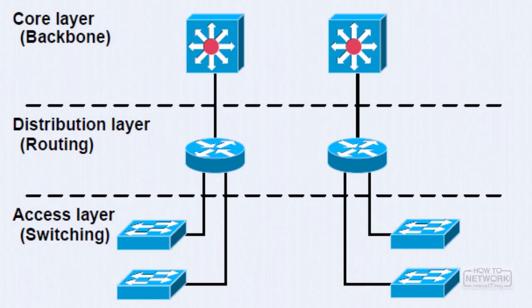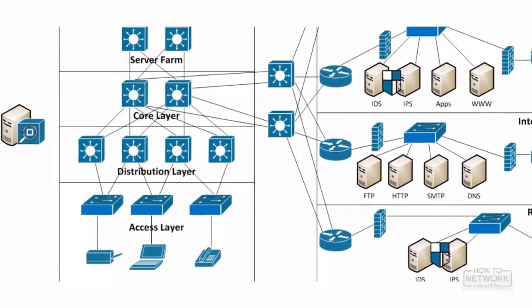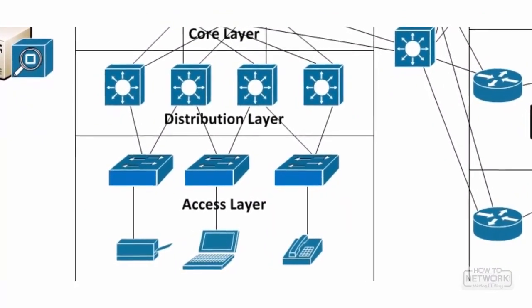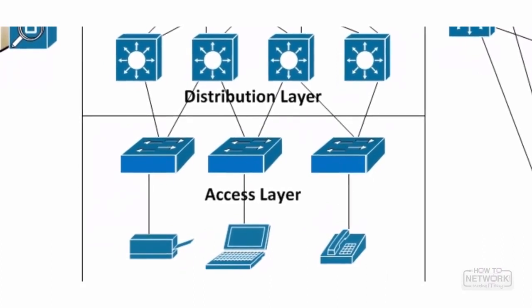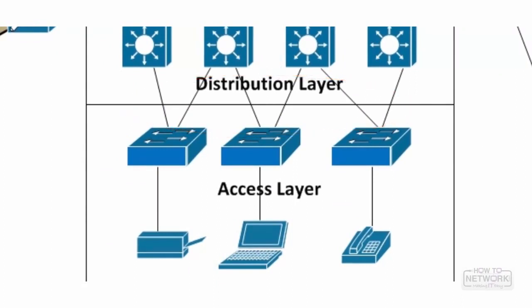The access layer is the on-ramp to the network — any end user or device that wants to connect to the network will do so via the access layer. Access layer switches should have redundant connectivity to the distribution layer to ensure network connectivity even when there is an equipment failure. You could provide redundant connectivity for the host to the access layer switches, but this is the exception to the rule. The access layer is comprised of Layer 2 switches, workstations, IP telephones, or any other device that requires access to the network.